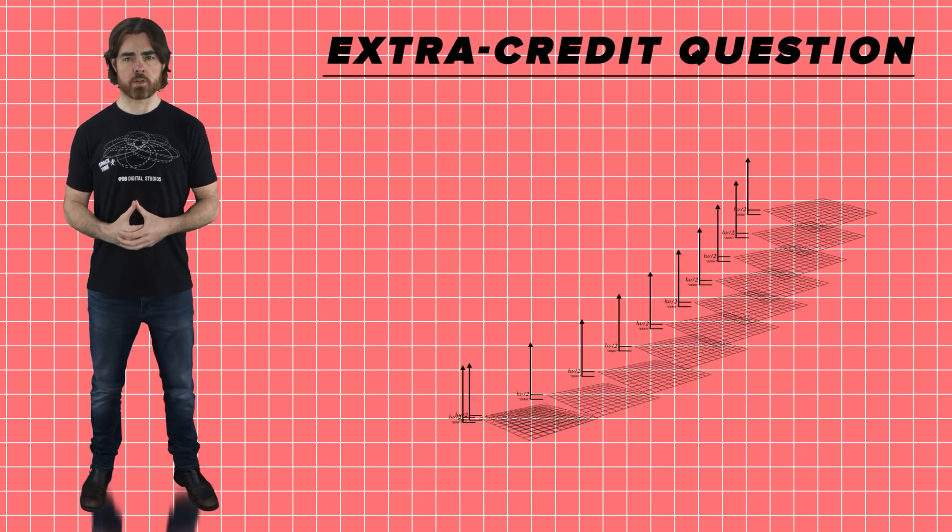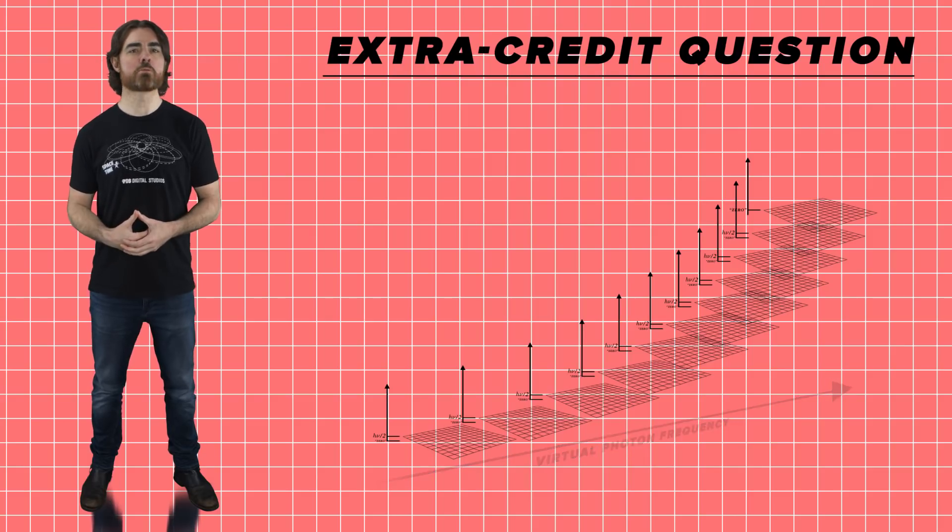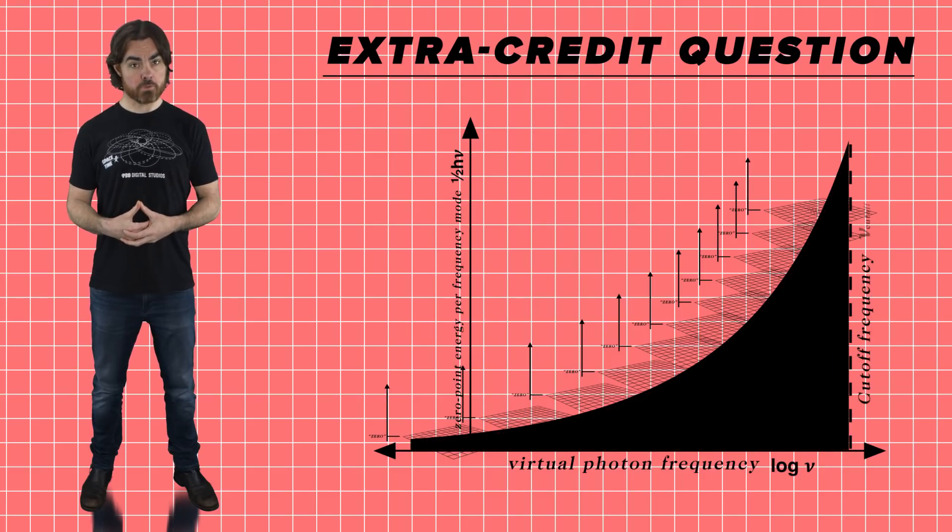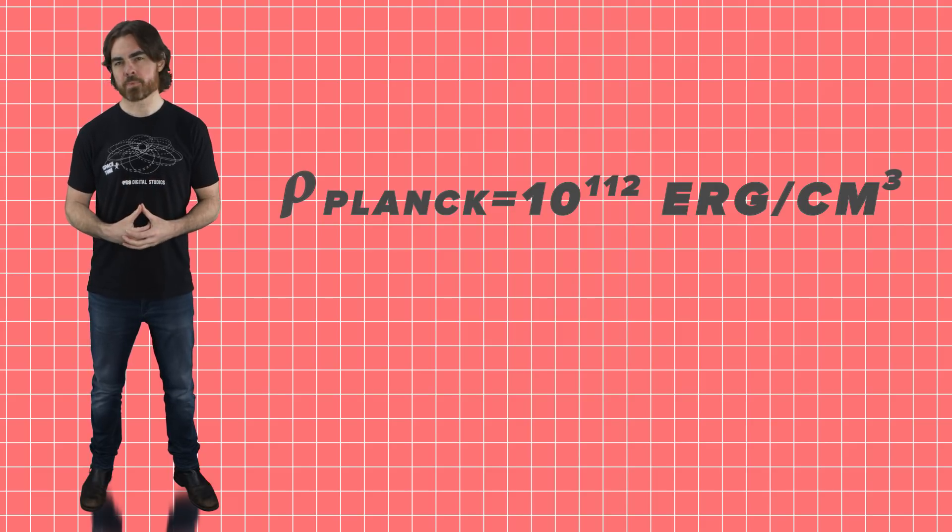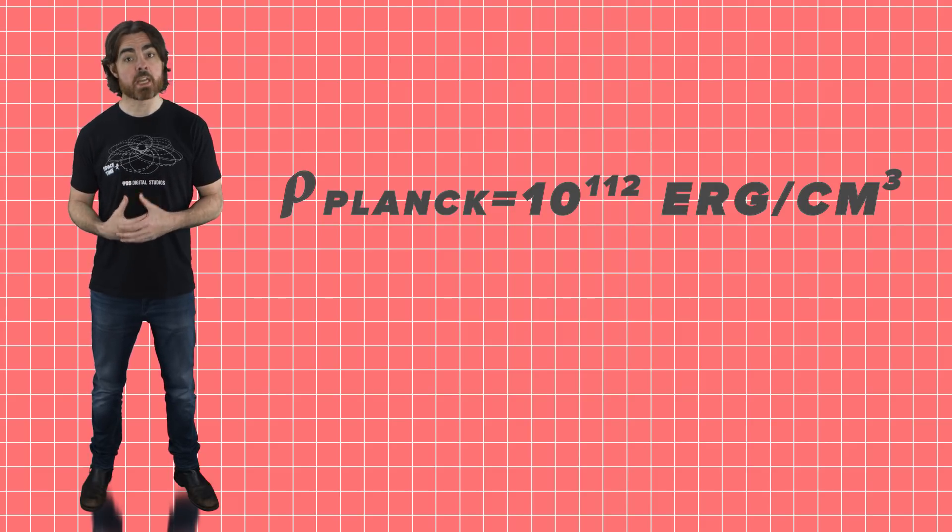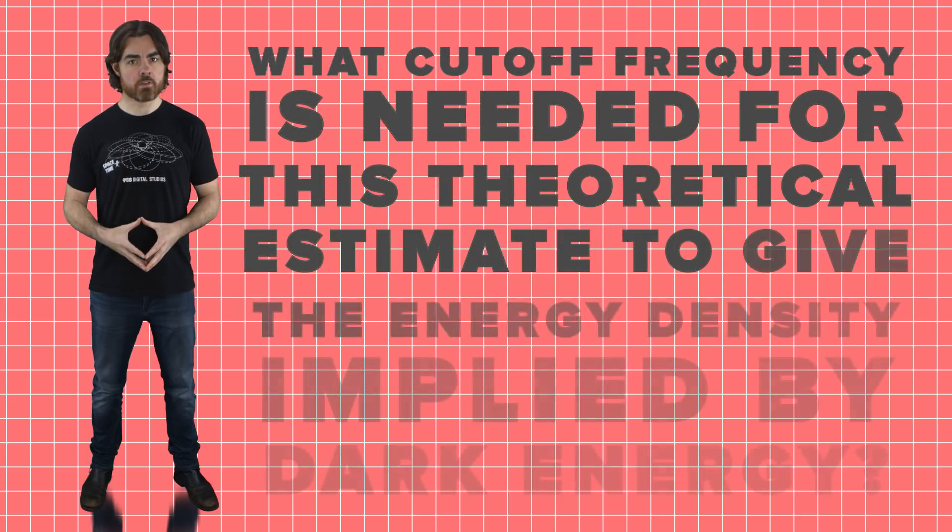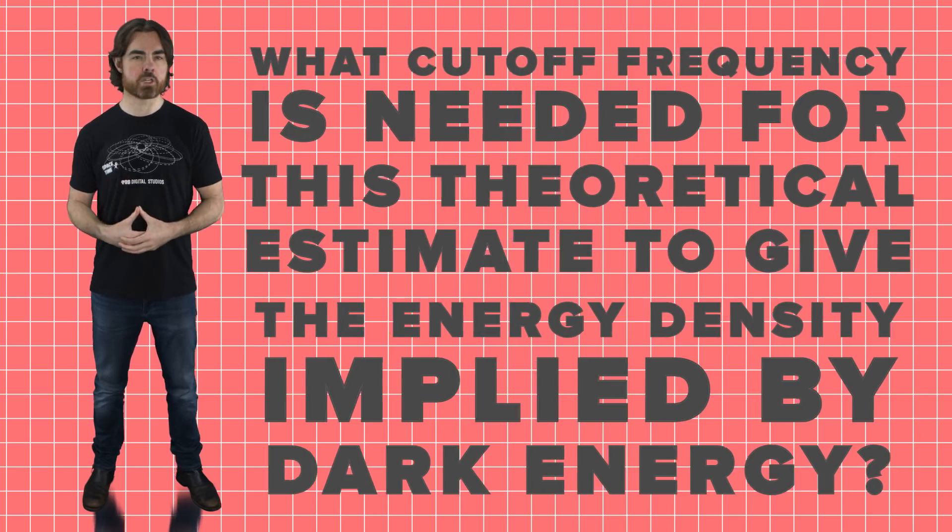And the extra credit question. So a simplistic theoretical estimate of the vacuum energy density comes from assuming that there are no virtual photons above a certain cutoff frequency. If you choose that to be the frequency corresponding to a photon with the Planck energy, you get a vacuum energy density of a ridiculously high 10 to the power of 112 ergs per centimeter cubed. In this theoretical estimate, vacuum energy density is proportional to the fourth power of cutoff frequency. So my question was, what cutoff frequency is needed for this theoretical estimate to give you the energy density implied by dark energy?